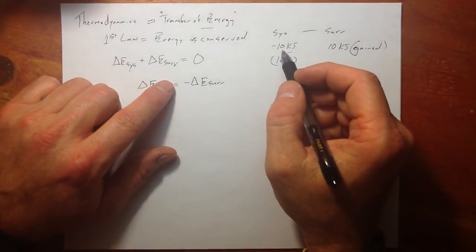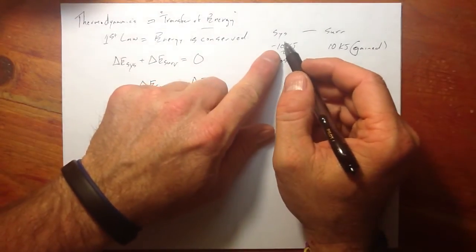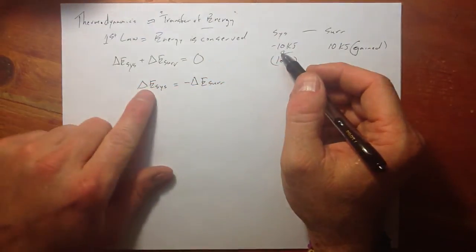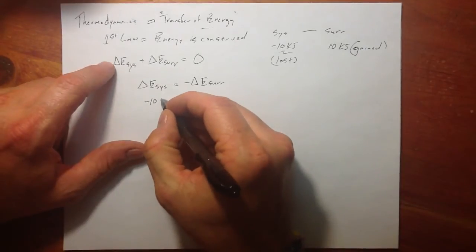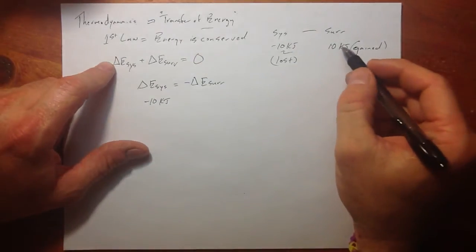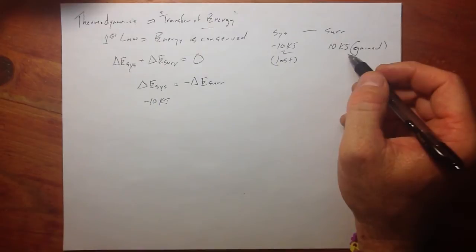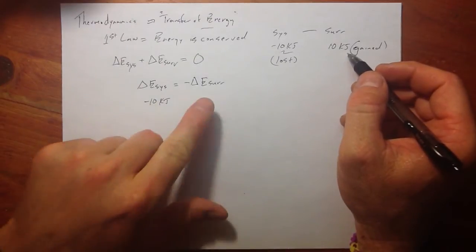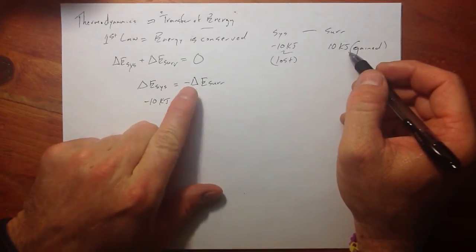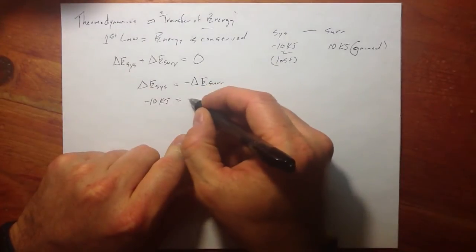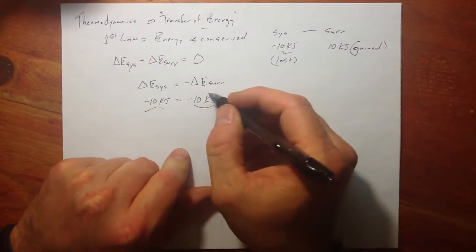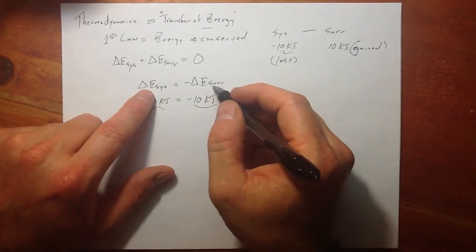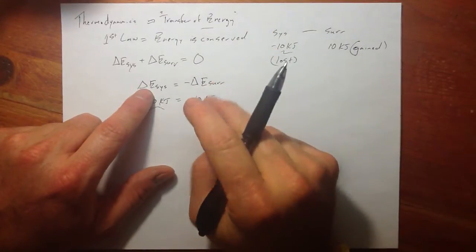Remember we just said 10 kilojoules was our currency. We lost that from the system. So we could say the system's change in energy would be minus 10 kilojoules. The surrounding would gain 10 kilojoules. So we could put 10 kilojoules in over here. Have a negative in front of it and negative 10 kilojoules equals negative 10 kilojoules. This is a very powerful equation. Two ways I want to show how it can be used.